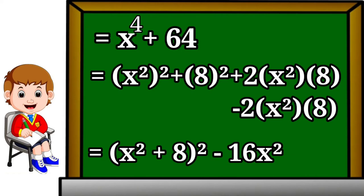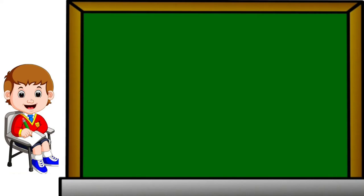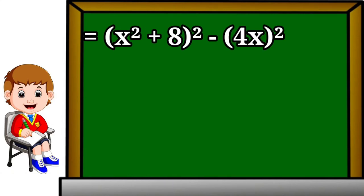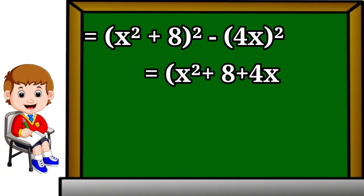Now we factorize it as (x² + 8)² - (4x)². It can be written in the form (x² + 8)² - (4x)², which becomes (x² + 8 + 4x)(x² + 8 - 4x).